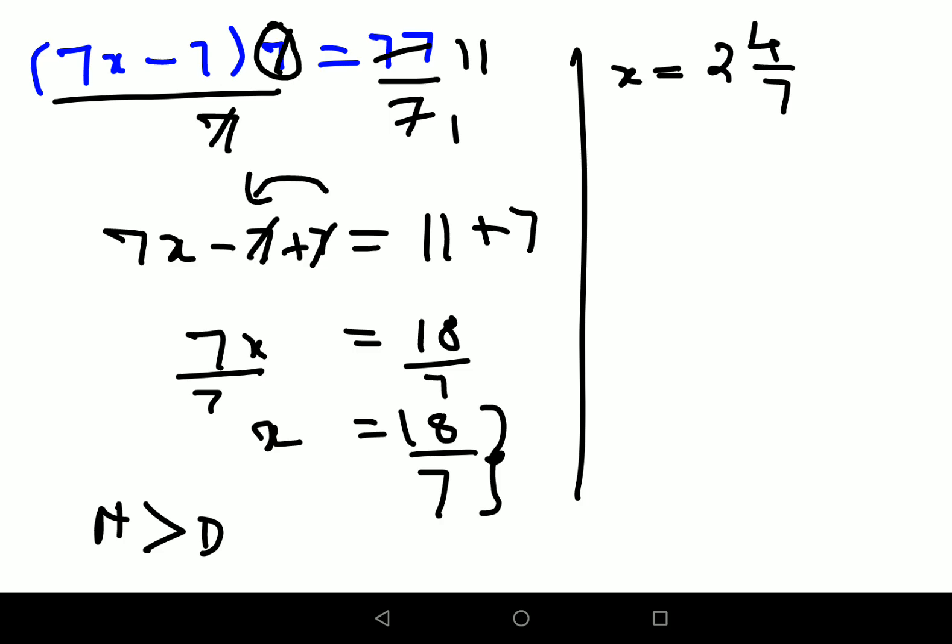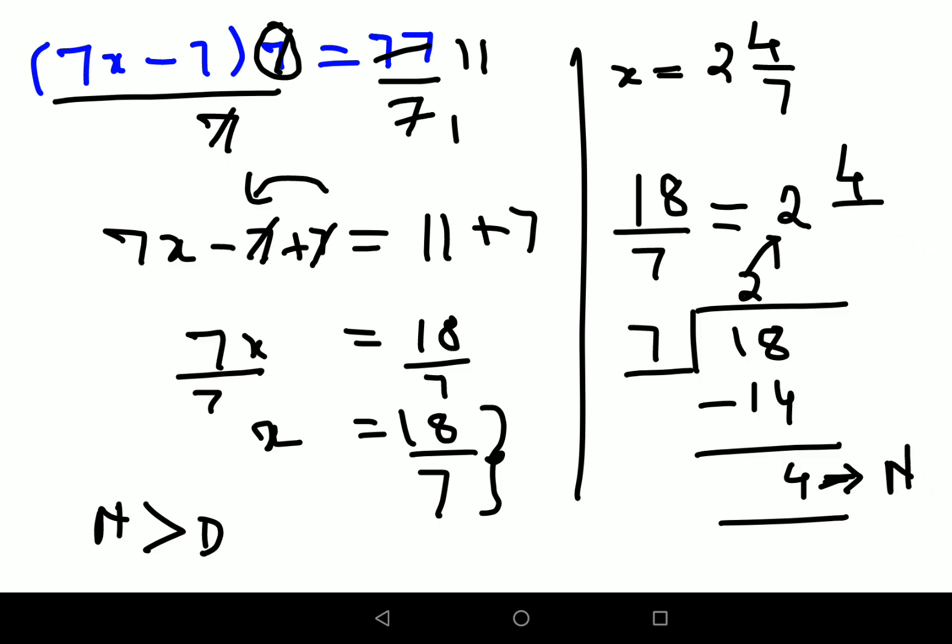For those who don't know how to do this, when you divide 18 by 7, whatever is your quotient, you write it here. When I do the division, 18 divided by 7, I get 2, which is 14, and then subtracting, you're left with 4. Whatever is your quotient goes here and whatever is your remainder becomes your numerator, so this will be 4 upon 7.